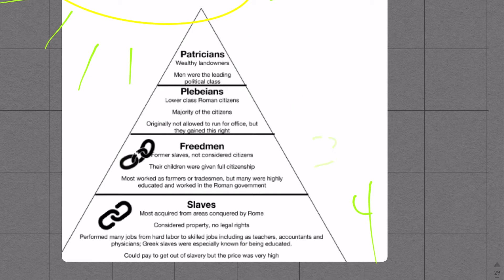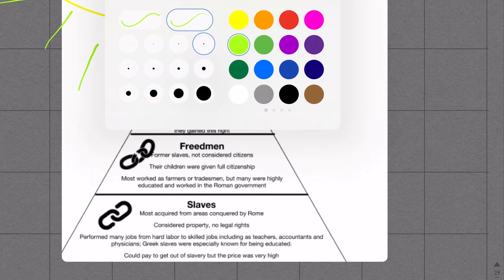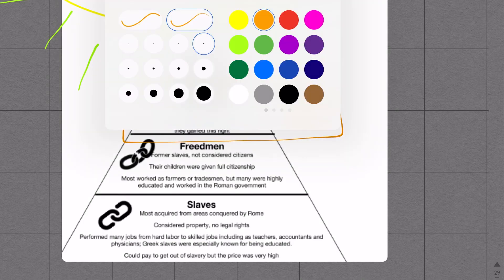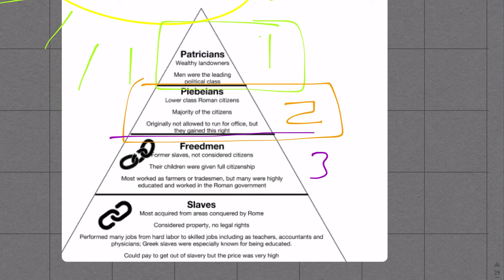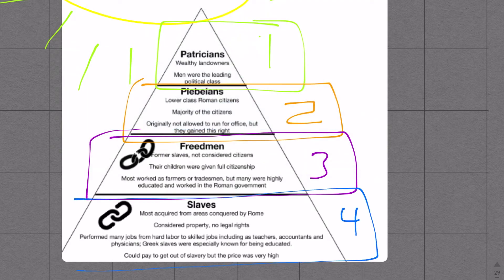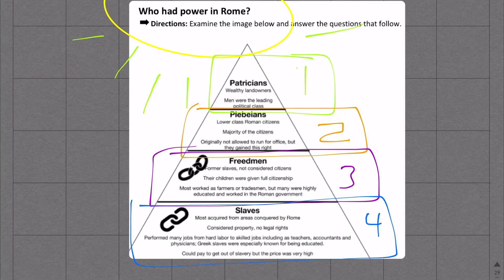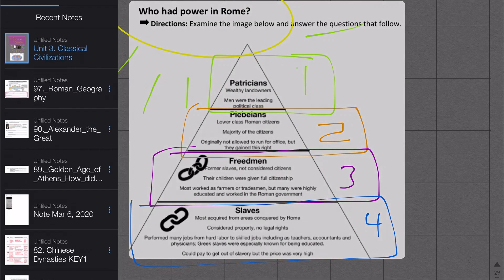I'm just going to highlight these a little bit nicer. Number one, this is the top step. Then I'm going to pick another color, let's do orange. Number two, these are the plebeians. I'll do purple, this is number three, the freedmen. I'll do four blue right here, these are slaves. Slaves, as we've seen in other civilizations, always at the bottom rung. This is again called a hierarchy triangle.